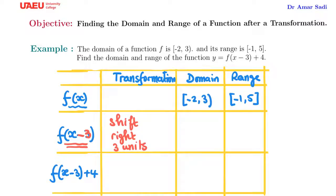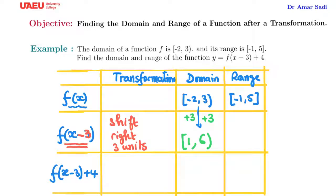That means the domain will change — it will increase by 3, so both numbers need to be increased by 3. It becomes -2 + 3 = 1, and 3 + 3 = 6. The range stays the same, so it is still [-1, 5].